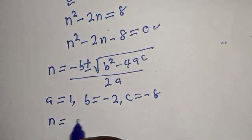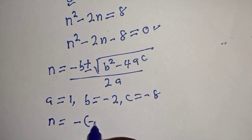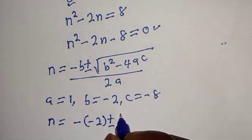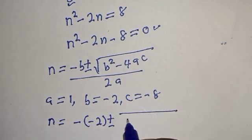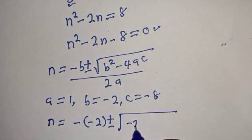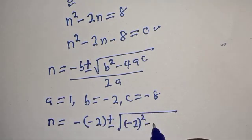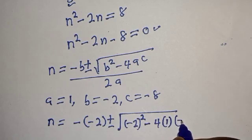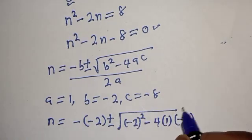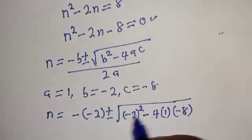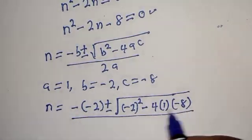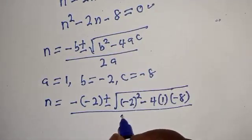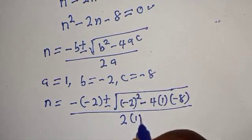So n equals minus bracket minus 2, plus or minus square root of minus 2 squared minus 4 multiplied by 1 multiplied by minus 8, over 2 multiplied by 1.